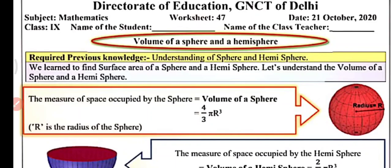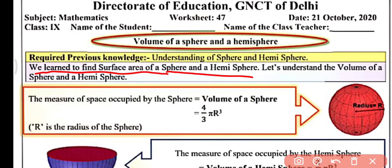Hi everyone, welcome to my YouTube channel NCRT Math Sub. Today in this video we will do worksheet number 47 for class 9 subject mathematics. In this video we are going to learn about the volume of sphere and hemisphere. The required previous knowledge is understanding of sphere and hemisphere.